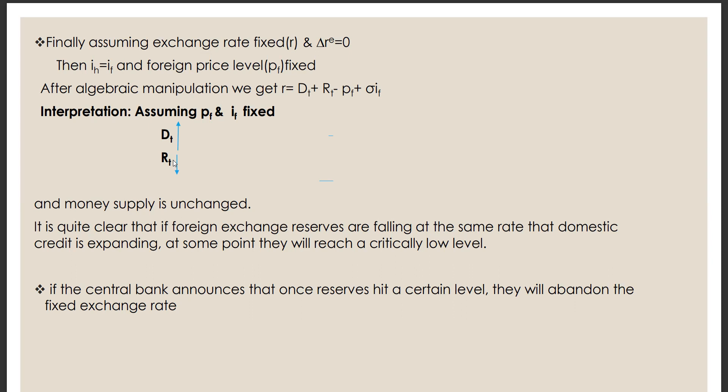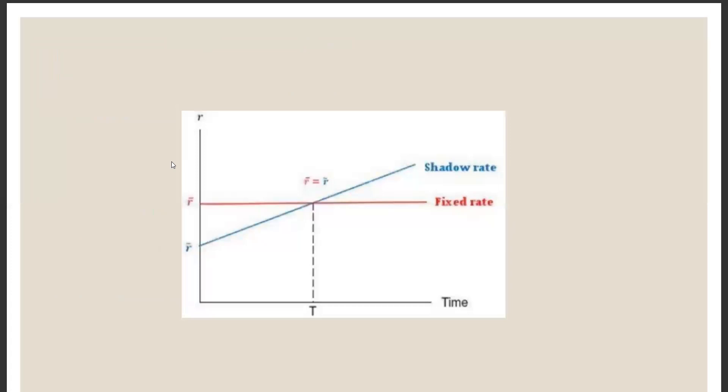So how we can interpret this equation? We can interpret this equation in the following way. If we assume that PF and IF is fixed, so an increase in domestic credit DT will lead to a fall in the foreign reserve RD. And money supply will remain unchanged. So it is quite clear that if foreign exchange reserves are falling at the same rate, the domestic credit is expanding. At some point, they will reach a critically low level. If the central bank announces that once reserves hit a certain level, they will abandon the fixed exchange rate.